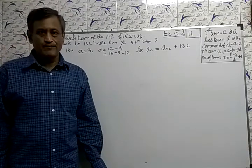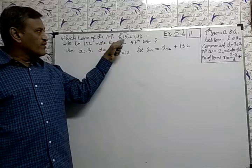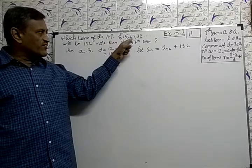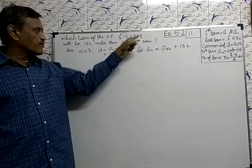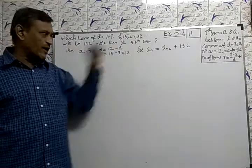This is 5.2, question number 11. Which term of the AP 3, 15, 27, 39, will be 132 more than its 54th term?